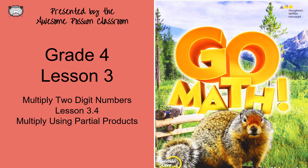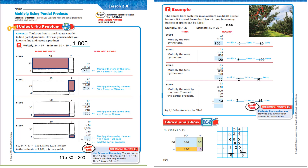Welcome back to GoMath. This is Grade 4, Lesson 3.4: Multiply Two-Digit Numbers — Multiply Using Partial Products.